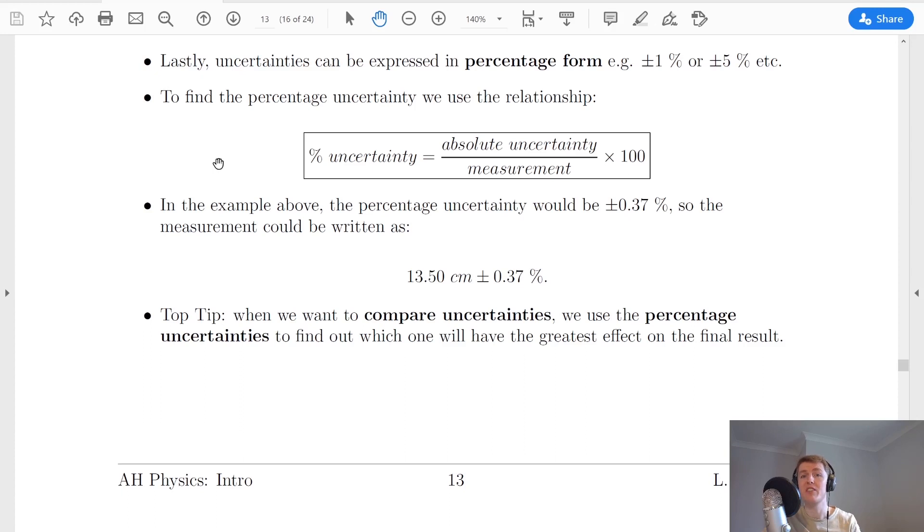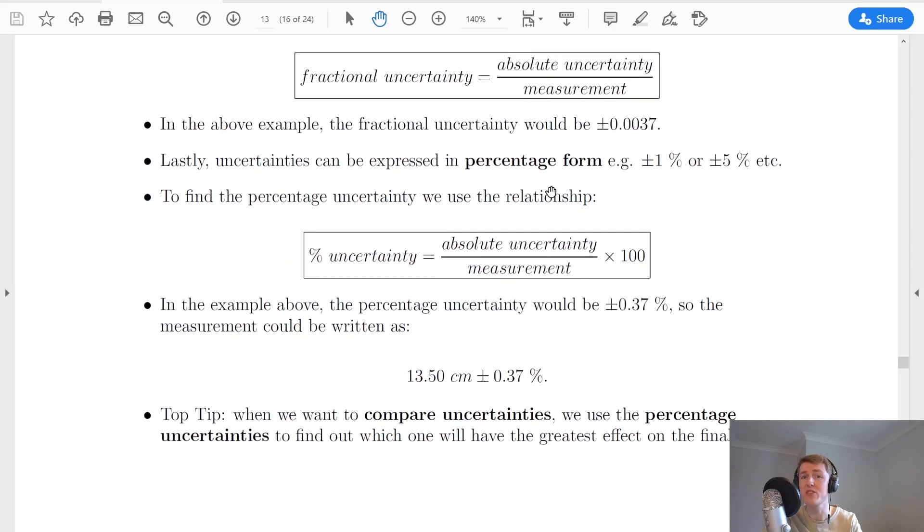To find the percentage uncertainty we use the relationship: percentage uncertainty = (absolute uncertainty / measurement) × 100. This part looks familiar because we just saw it in the fractional uncertainty formula. The fractional uncertainty is just this part but now we're multiplying it by 100 to get a percentage uncertainty. So your fractional uncertainty is just your percentage uncertainty without multiplying by 100.